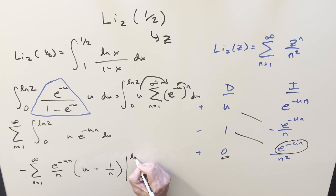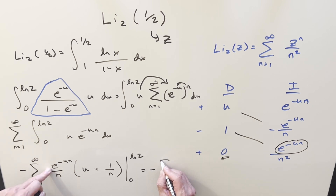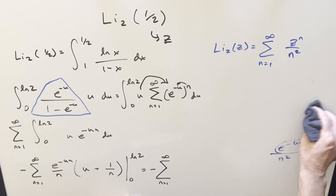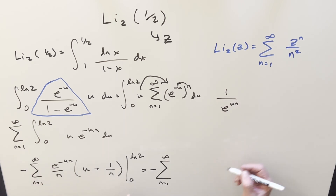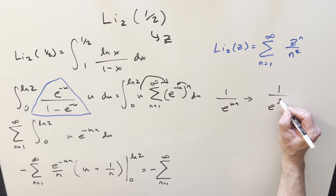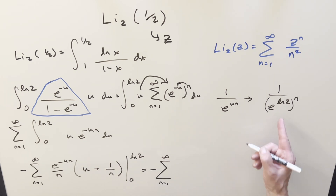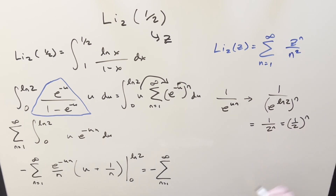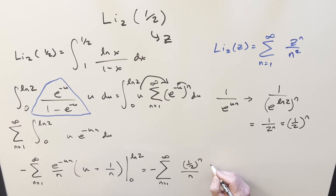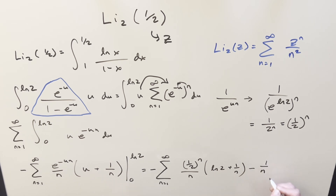We evaluate from 0 to ln 2. For e^(−un) at u = ln 2: that's 1/e^(n·ln 2) = 1/2^n = (1/2)^n. So the upper bound contribution gives (1/2)^n over n, times (ln 2 + 1/n). Plugging in u = 0 gives e^0 = 1, so the lower bound contributes 1/n times 1/n = 1/n². After evaluating, we get terms involving (1/2)^n · ln 2 / n, (1/2)^n / n², and 1/n², all inside the sum.